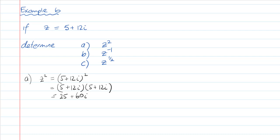This is a perfect square, and we could use that technique as well. Plus 60i plus 144i squared. And 25 minus 144 equals negative 119 — I hope my maths is right there — plus 120i. So there's part a.